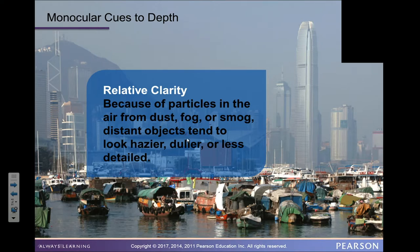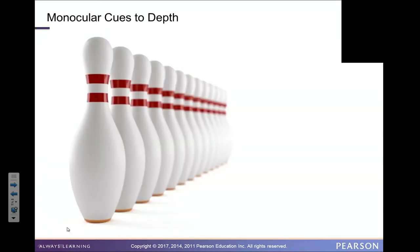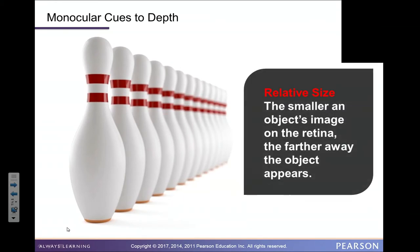Relative clarity: because of particles in the air from dust, fog, or smog, distant objects tend to look hazier, duller, or less detailed. The closer something is, the clearer it is — that's the bottom line. Even looking with one eye, your brain understands that the clearer thing is the closest thing and the fuzziest thing is getting further away.